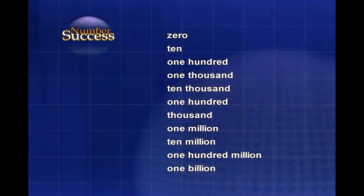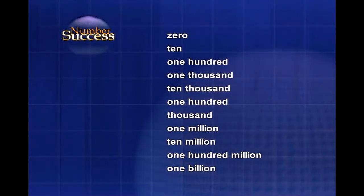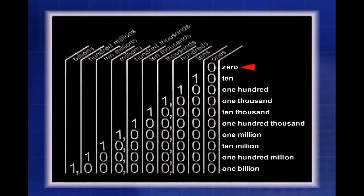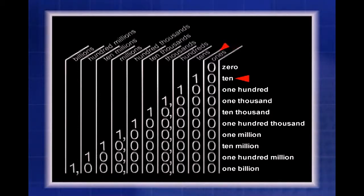The numbers you see before you we will now be placing in a place value chart to demonstrate the number system. Zero has one place — the zero goes into the ones column. Ten has two places — the zero goes into the ones column and the one goes into the tens column.